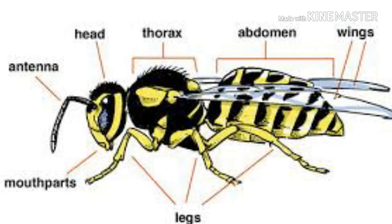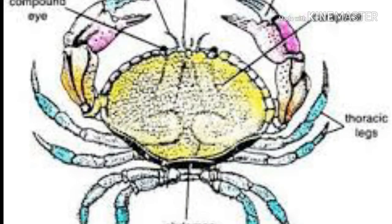They are mostly dioecious. Fertilization is usually internal, but a few aquatic forms have external fertilization. Gonads have ducts and sexual dimorphism may be present. They are mostly oviparous. Development may be direct or indirect. Animals of Arthropoda are the most successful invaders of the terrestrial environment among invertebrates, due to the presence of cuticle, appendages, and wings.